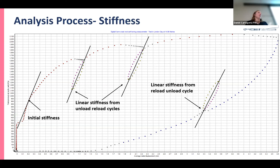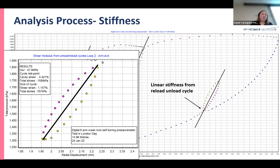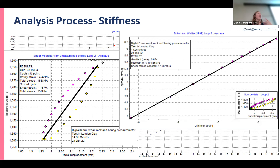Stiffness is the simplest thing you can get out of a pressuremeter test. The first way of looking at it is initial stiffness and linear stiffness. For a clayish material they should all have the same gradient - a good sense check. However, looking at a zoomed-in cycle, it isn't actually a straight line - soils are non-linear. So we apply a power law to get a constant, an alpha value, and a beta, looking at data on log-log scales to get a non-linear representation of stiffness.